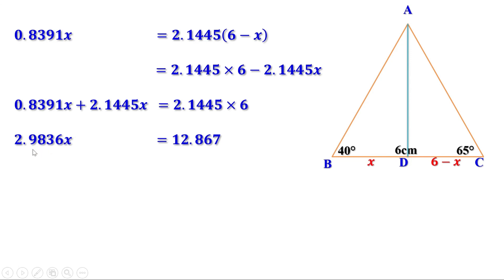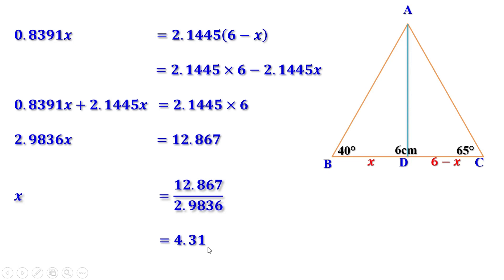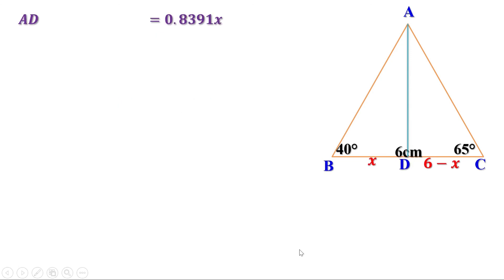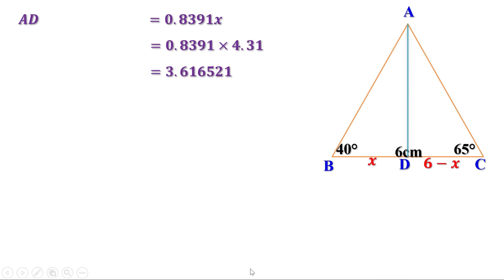Now let us take the term containing X to the other side. So we can write 0.8391X plus 2.1445X equals 2.1445 into 6. Adding these two, we get 2.9836X, and multiplying the right side, we get 12.867. So 2.9836X equals 12.867. Now let us find the value of X — taking 2.9836 to the other side, X equals 12.867 divided by 2.9836, which is approximately 4.31 centimeters.